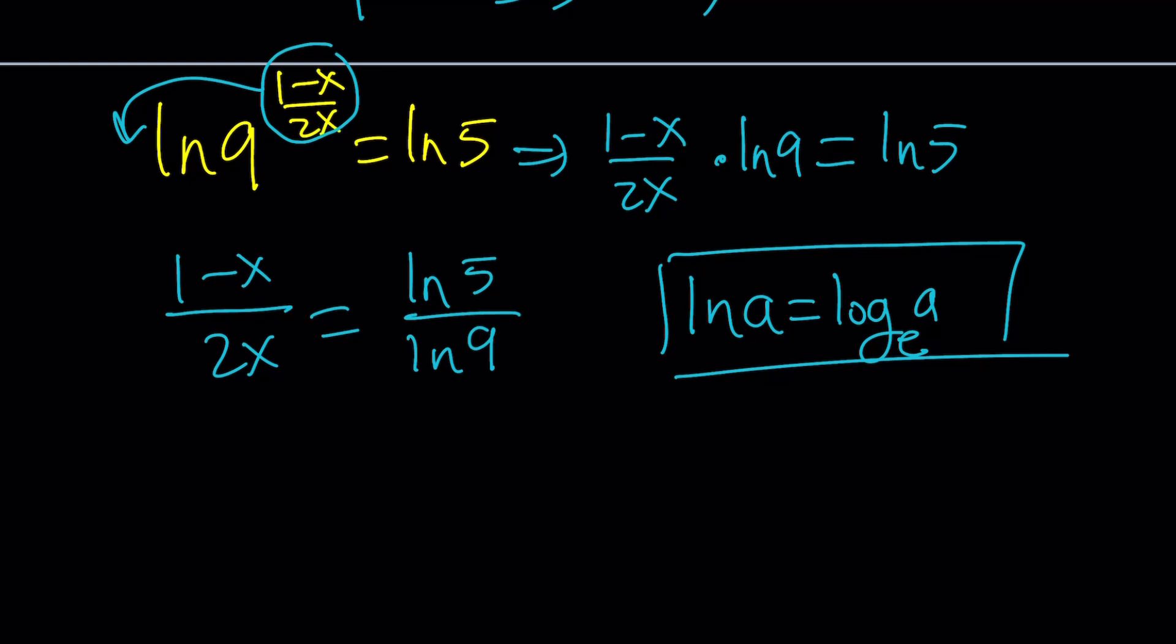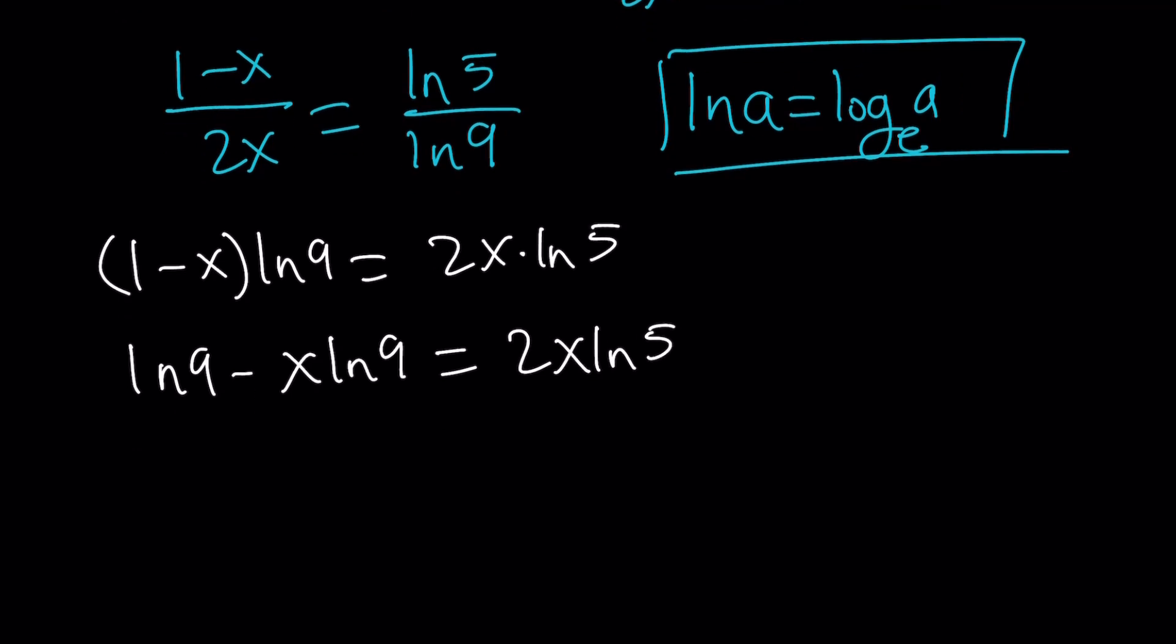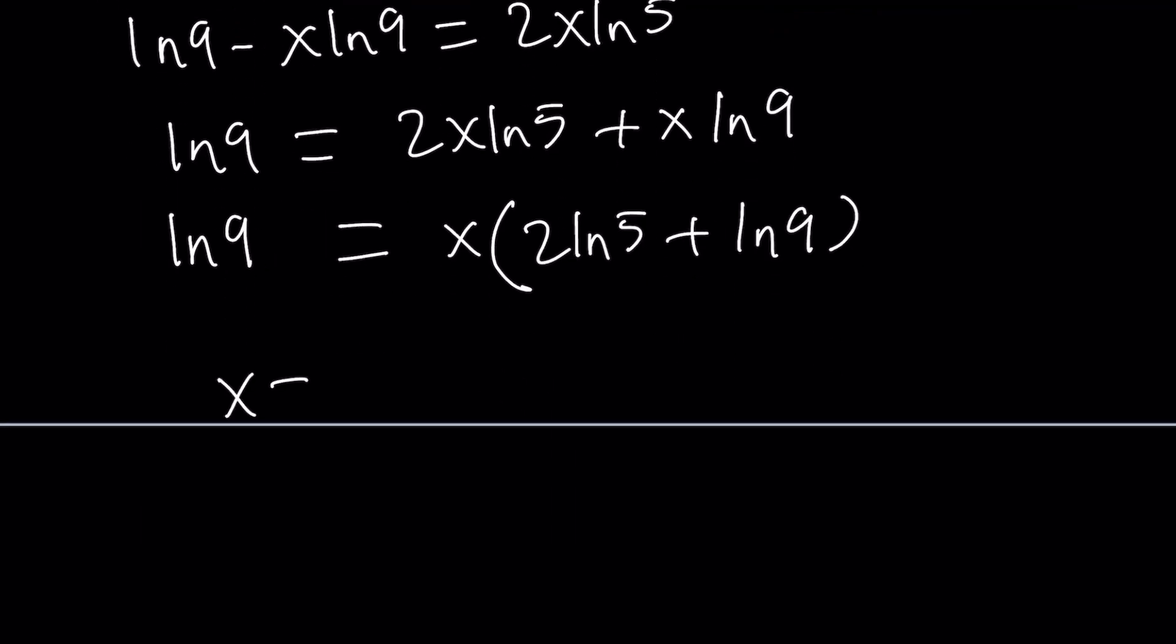How do you solve for x? You can cross-multiply or separate the fraction. I'm going to cross-multiply. 1 minus x times ln 9 equals 2x times ln 5. Distributing: ln 9 minus x ln 9 equals 2x ln 5. Let's put the x's together: ln 9 equals 2x ln 5 plus x ln 9. Factor out x as 2ln 5 plus ln 9, and we get x equals ln 9 divided by 2ln 5 plus ln 9.